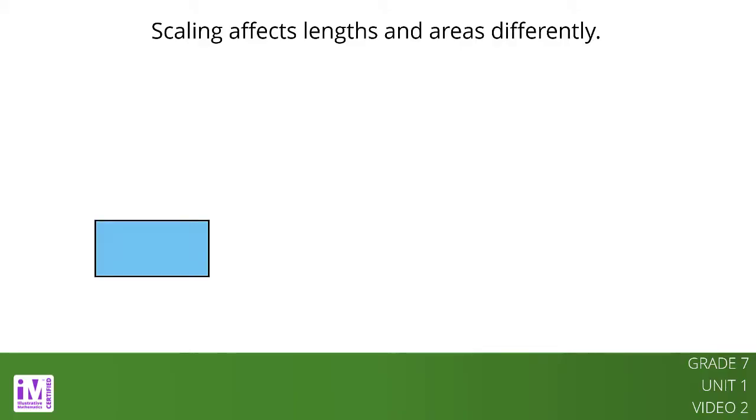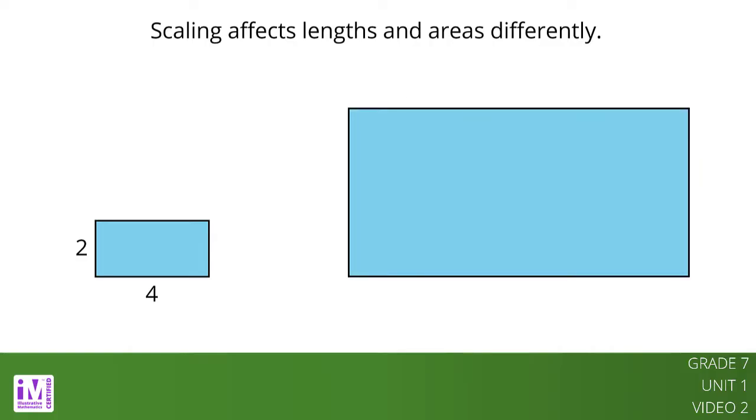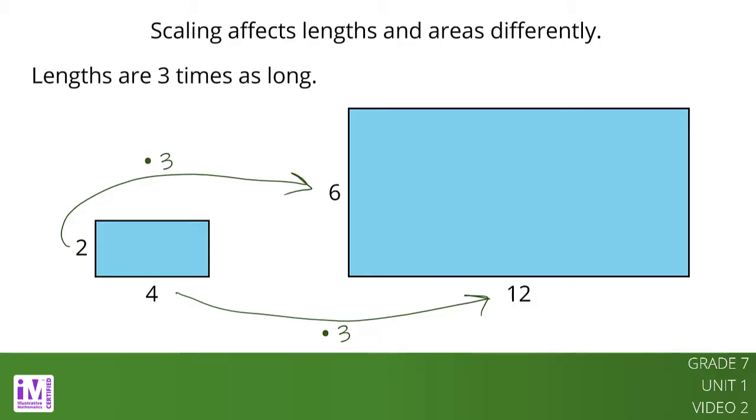For example, here is a rectangle with side lengths 2 units and 4 units. If we make a copy of this rectangle using a scale factor of 3, the side lengths of the copy will be 6 units and 12 units. Each side length in the copy is 3 times as long as the corresponding side length in the original rectangle.